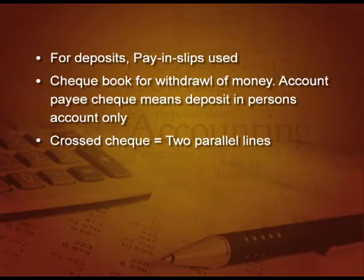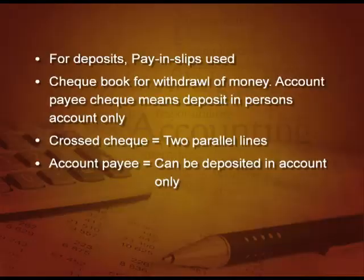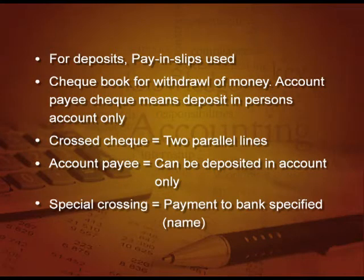What is a cross cheque? When we put two parallel lines on the face of the cheque, it is called a cross cheque. This crossing can be of two types. First, account payee — which can be deposited in the account only. But there can be special crossing also: within those parallel lines, if you have written the name of the bank, then it can be deposited only in that particular bank — that is called special crossing. For example, if I put a special crossing like SBI, you can deposit this cheque only in an SBI account and nowhere else.